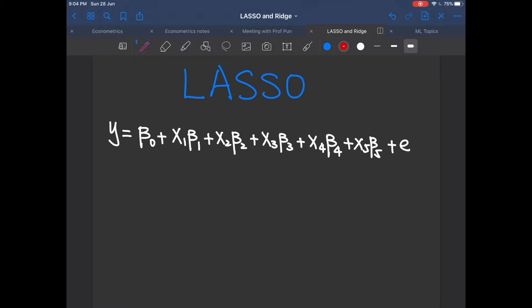Here, let's say beta1 is shrunk to zero, beta4 is also shrunk to zero. Then you can eliminate these two terms and now it becomes a three variable model. So we say that Lasso model selects the remaining three variables.